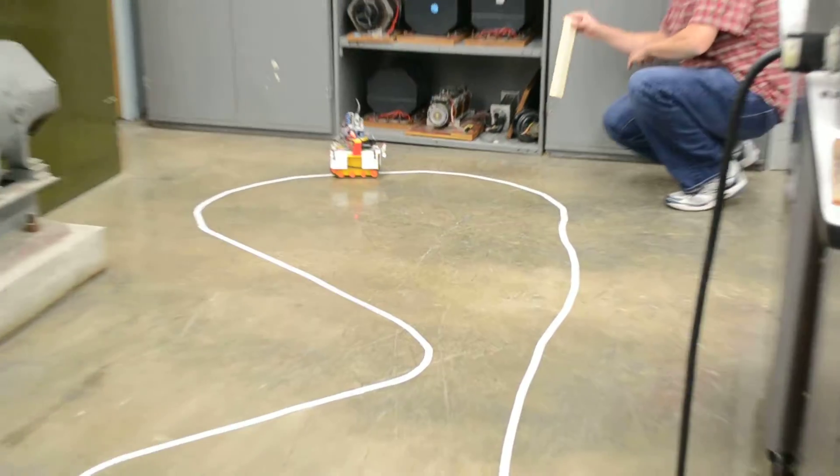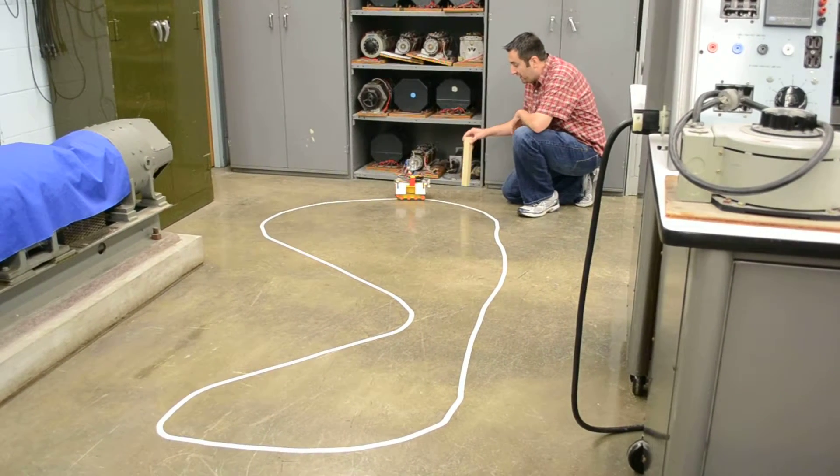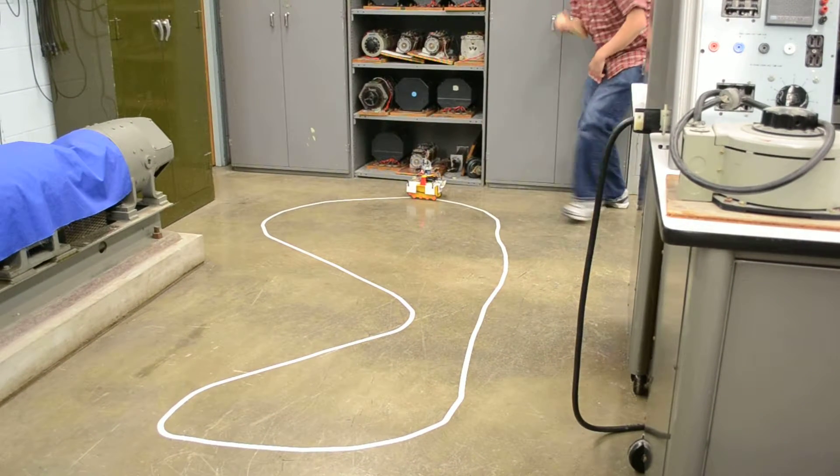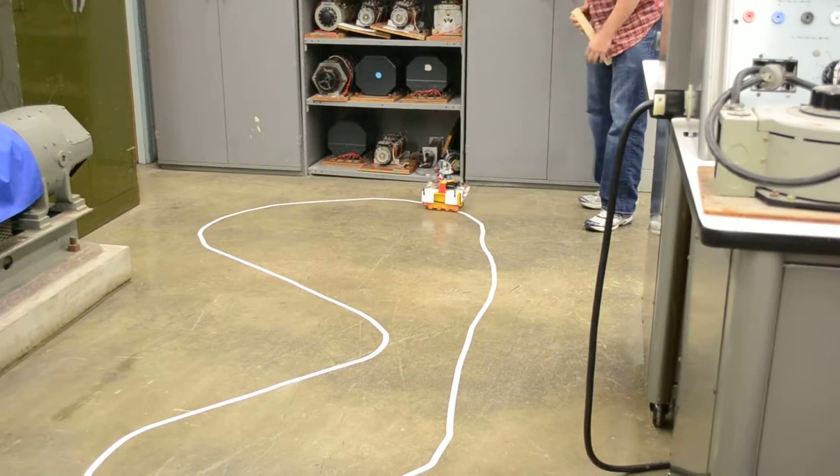Now while we are in autonomous mode, just to show you that in the case something, it's obviously following the track, but in the case something comes just temporarily, notice how it stops and then it continues to move. Here's one more time.